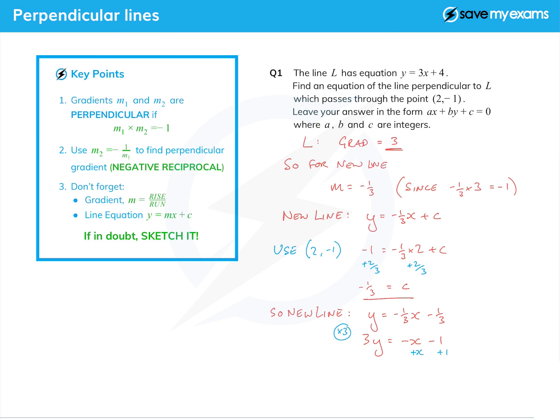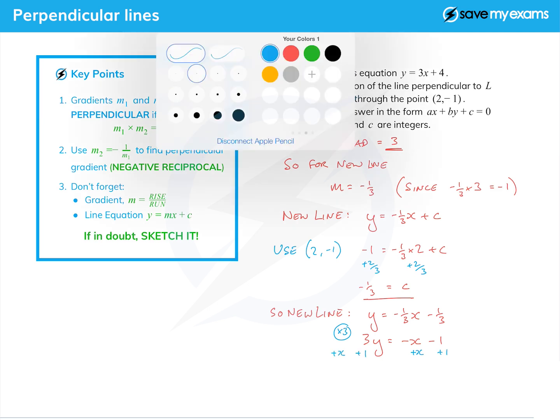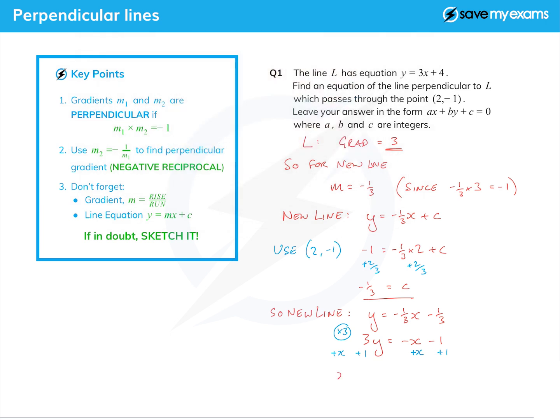To put it all on the same side, let's add the x to both sides and add the 1 to both sides. That gives me my final answer of x plus 3y plus 1 equals 0.